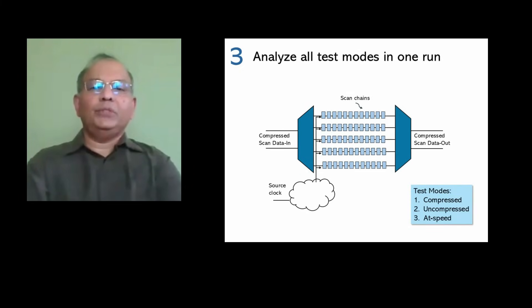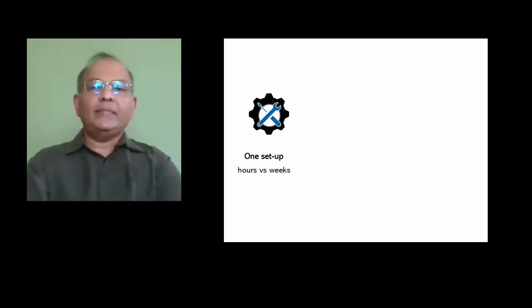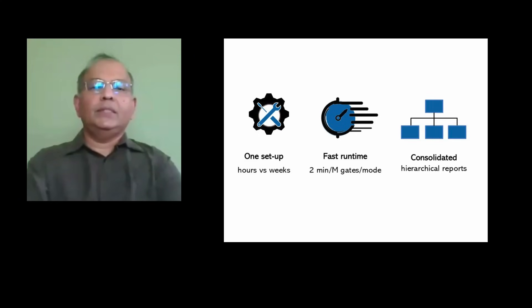A tool that analyzes all test modes in a single run will save several weeks. First, only one setup is needed for all test modes, taking hours instead of weeks. Second, multimode DFT can achieve a faster runtime of only two minutes per million gates per test mode. Third, consolidated hierarchical reporting in a single report enables more efficient engineering review.